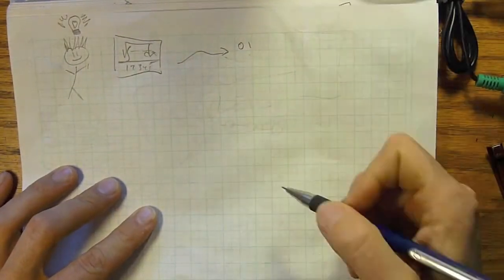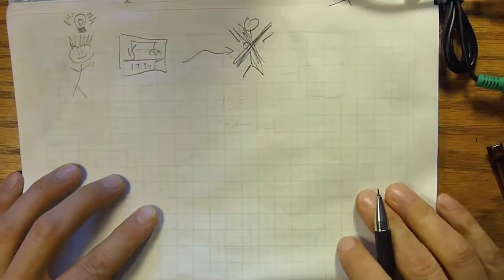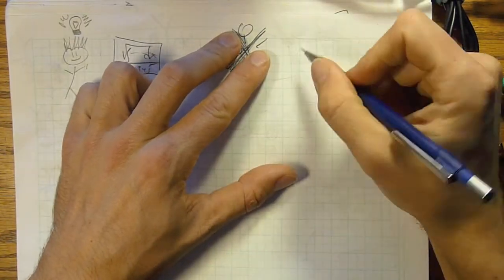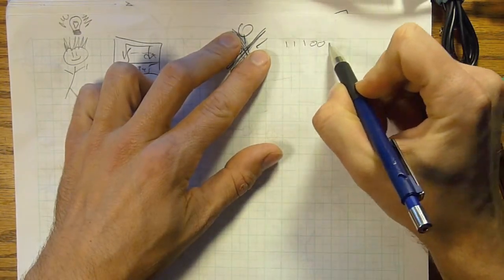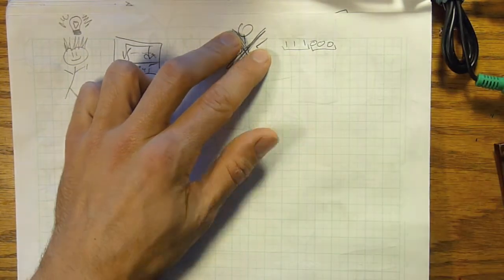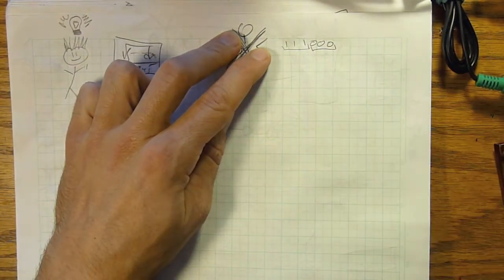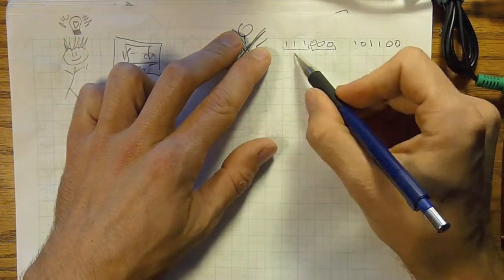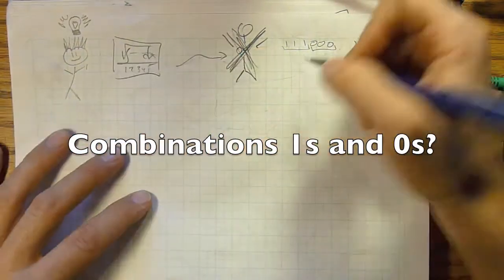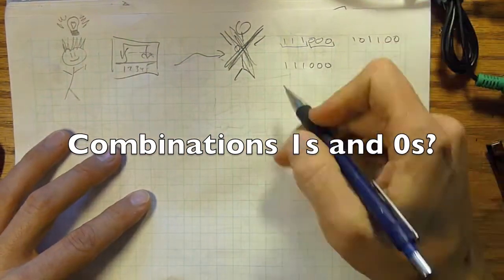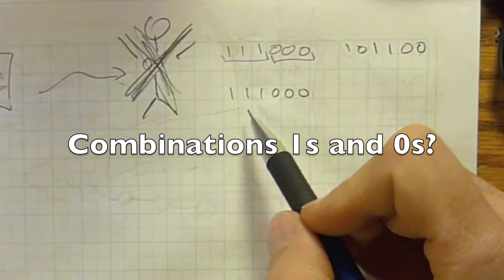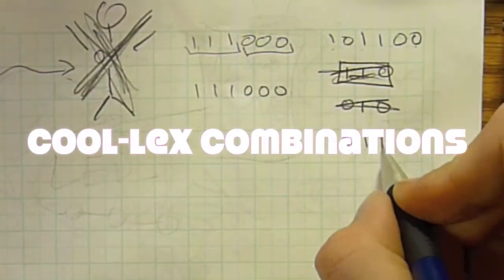You could dress up as zeros and ones — not exactly just plain zeros and ones, but some sort of combination of zeros and ones. Specifically, combinations of three ones and three zeros. But not just regular combinations — we're talking cool X combinations.